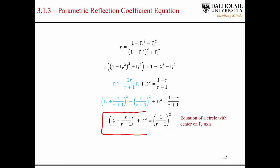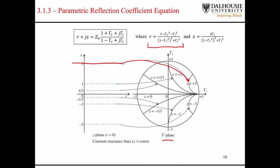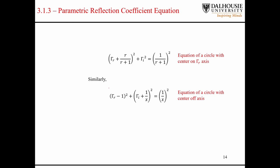Similarly, we can do the same thing with the other equation to find where the constant reactance circles come from. The derivation is similar — I won't go through the full process — but the result is also the equation of a circle. In this case, the center is located outside the region where gamma is less than 1, off the real axis.